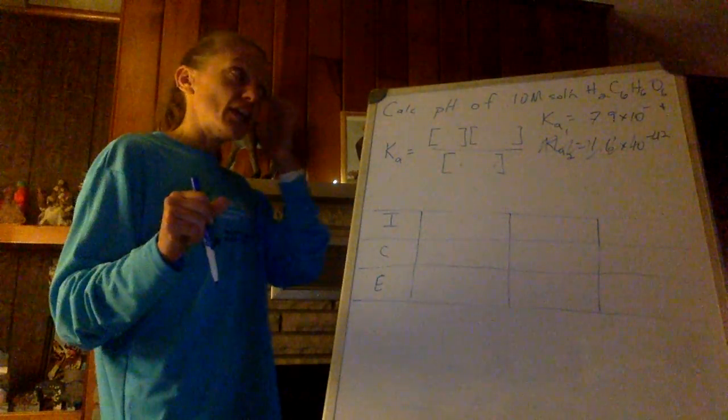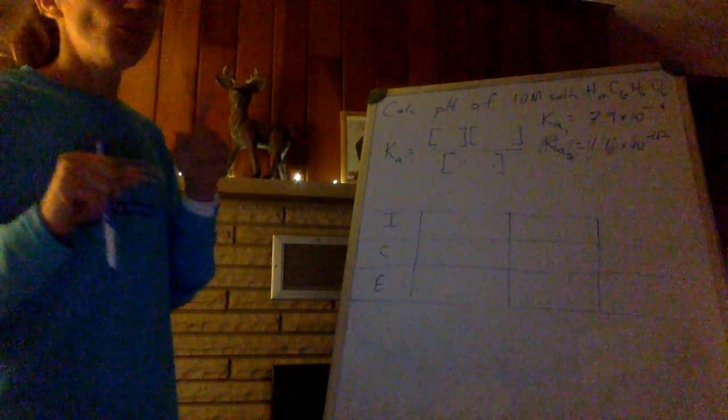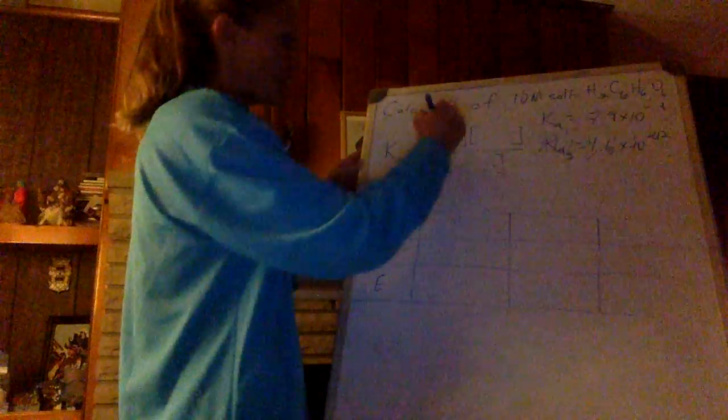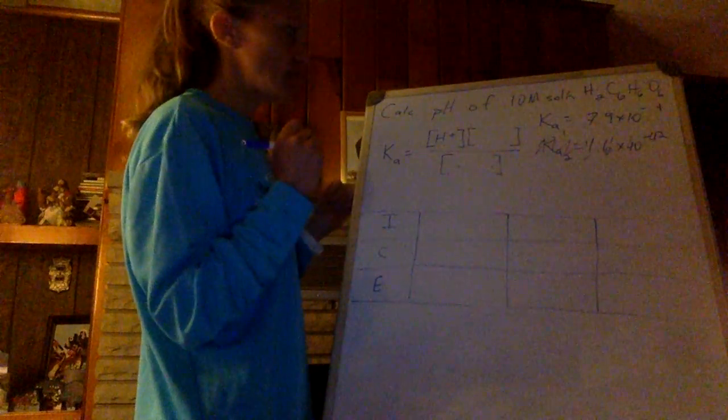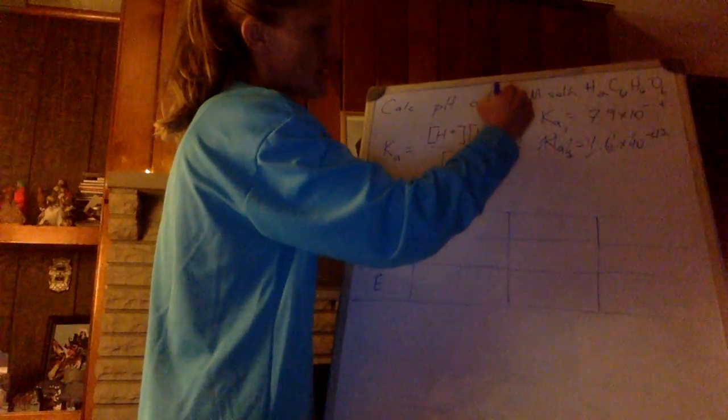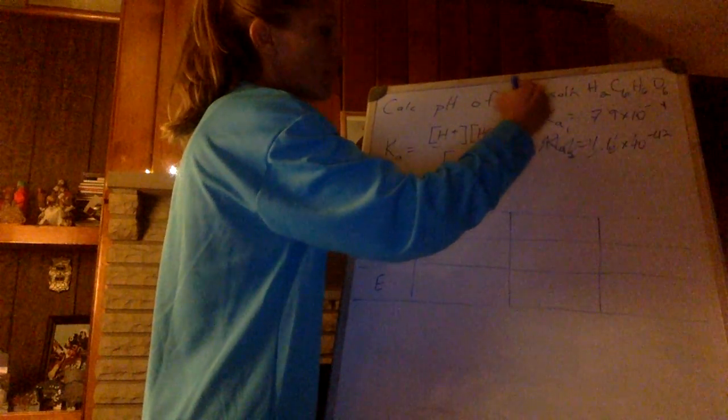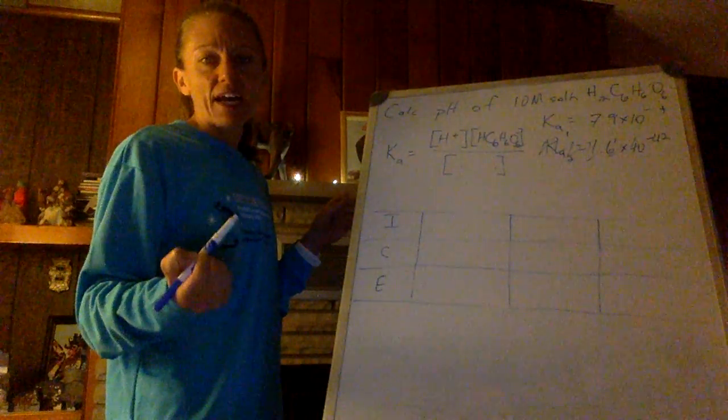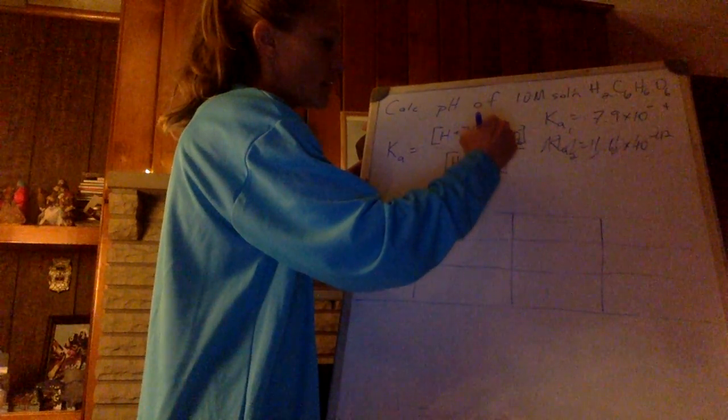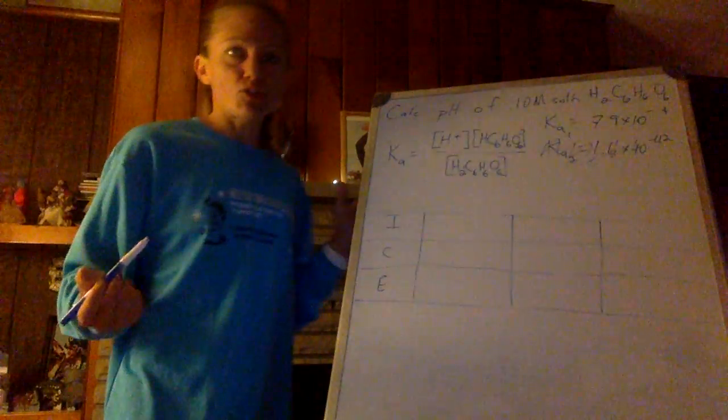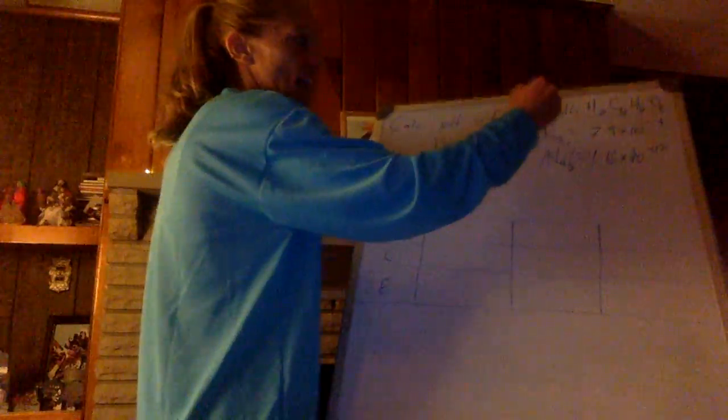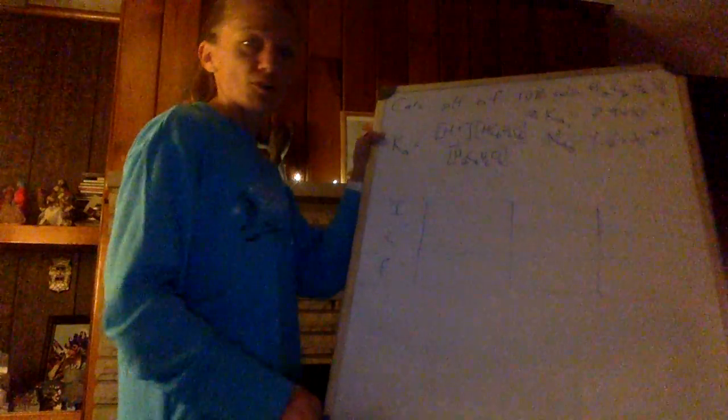So what we do is we write the dissociation for the first Ka. So that means I'm going to get a hydrogen ion, one of them coming off HC6H6O6 minus. It's written down in your packet, way neater than that. And on the bottom, I'll have the undissociated ascorbic acid. That was easy. And this is the Ka value I'm using, the one for the first one.